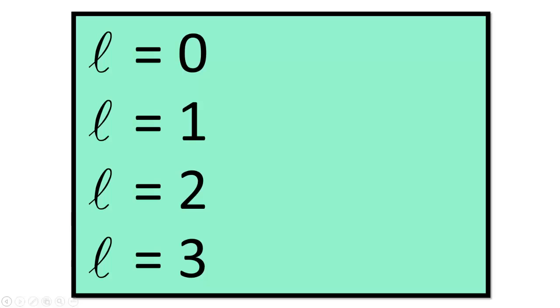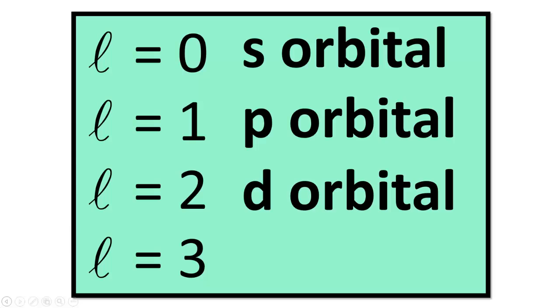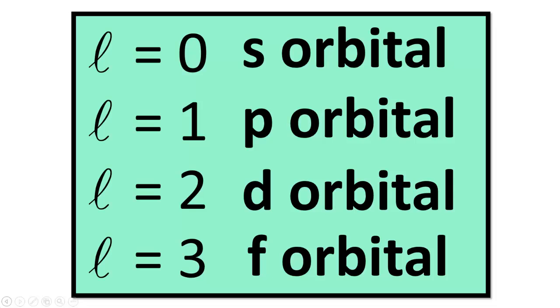If you don't know much about quantum numbers, I suggest you check out my video on orbitals and quantum numbers, since this knowledge is kind of a prerequisite for understanding the content of this video. Values of the azimuthal quantum number are assigned the letters S, P, D, and F, for L values of 0, 1, 2, and 3, respectively.